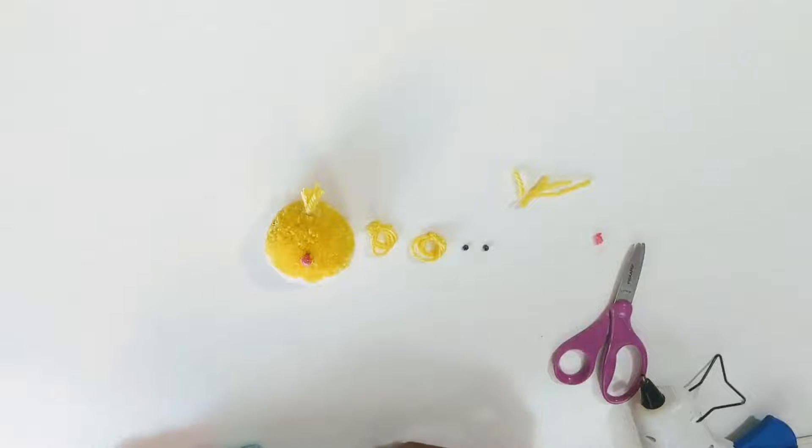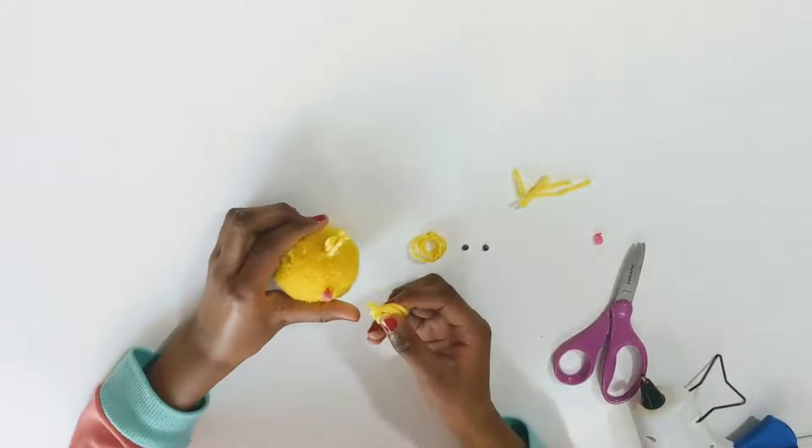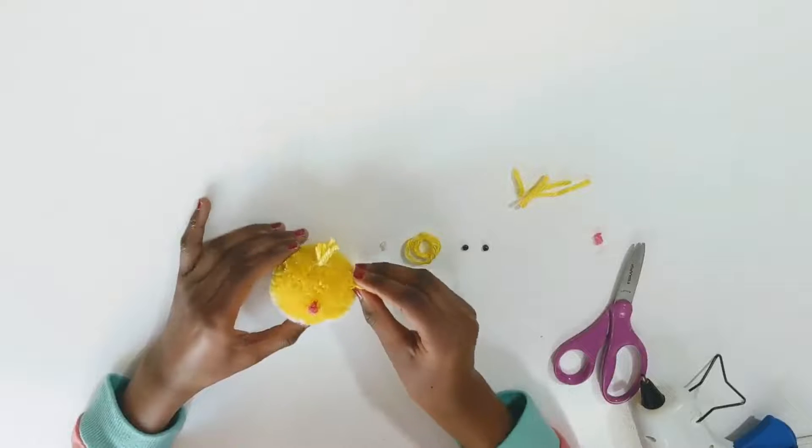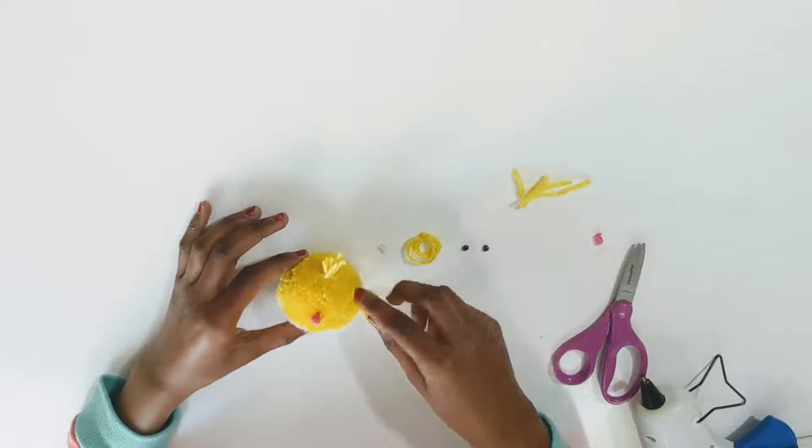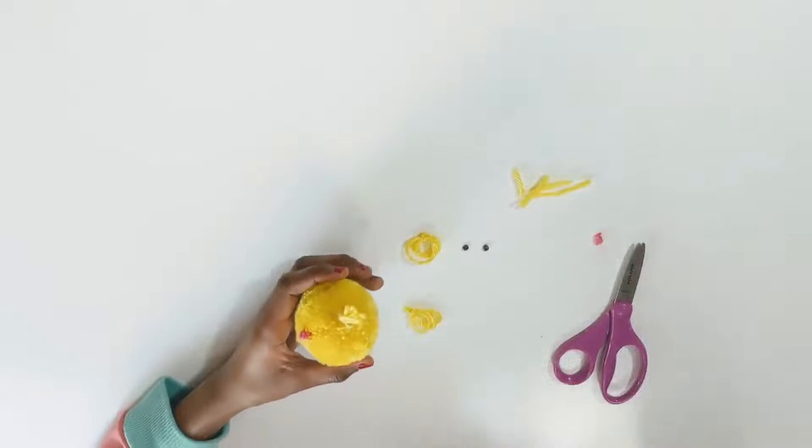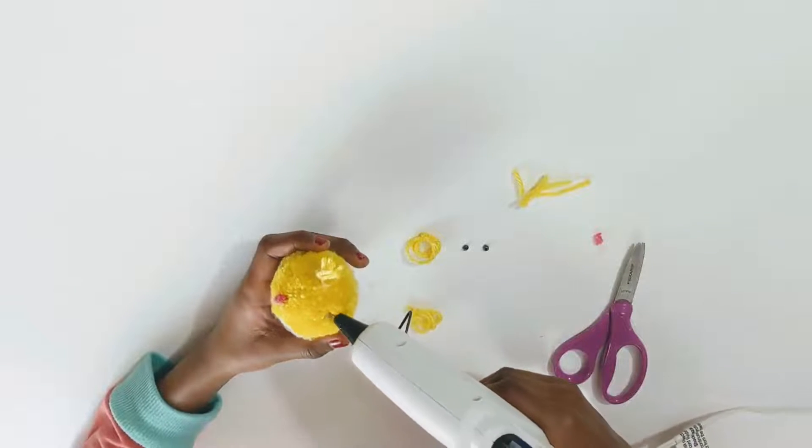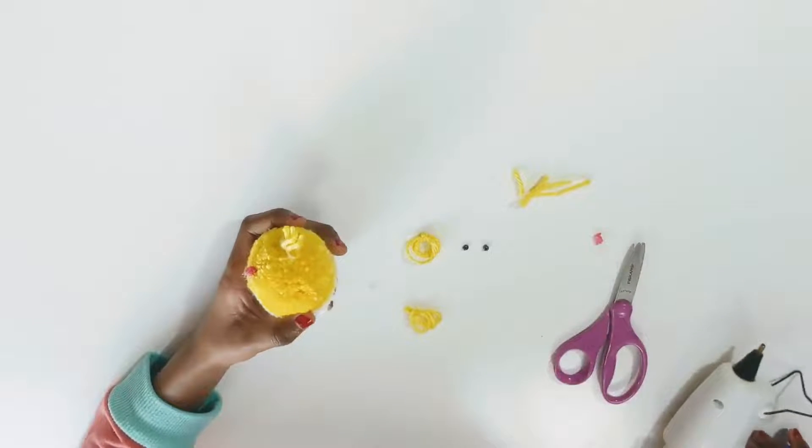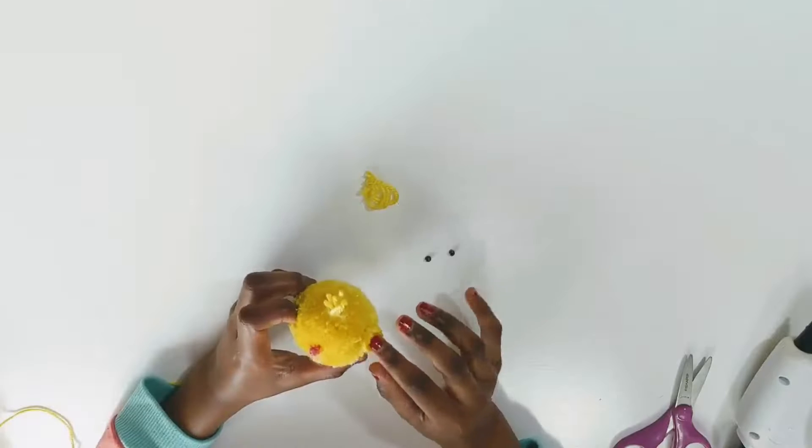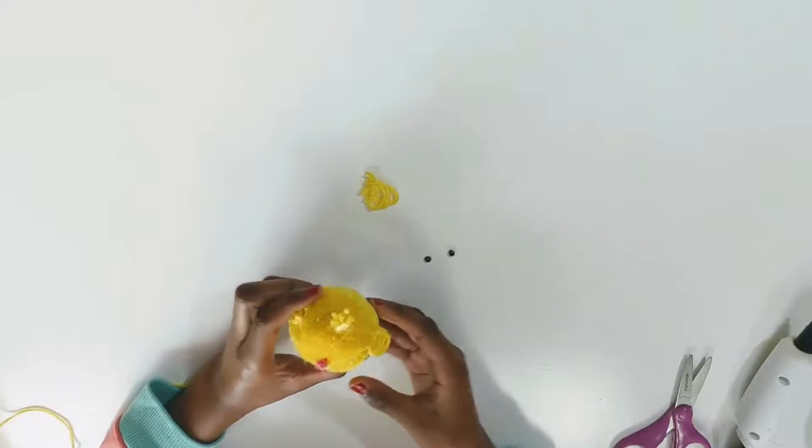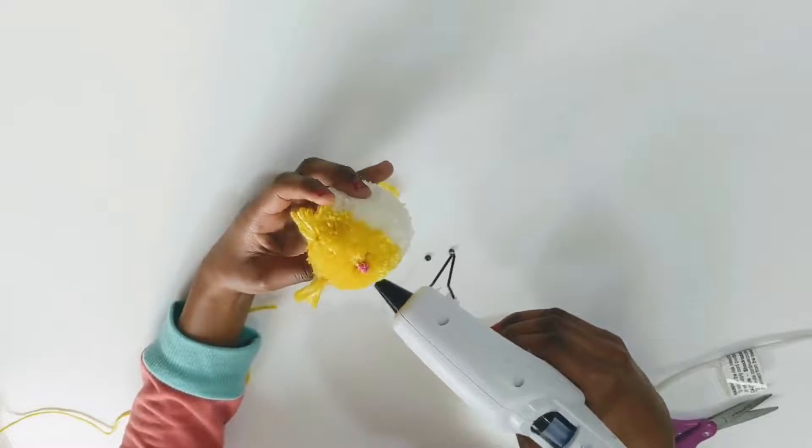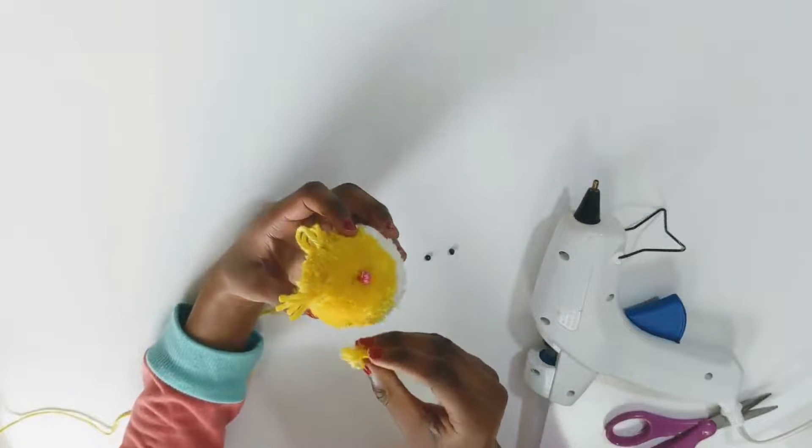It's time for the flaps. The flaps are going to go on either side, just like this. First, we're going to dig a little hole again. Insert some glue and do the same thing. Now we'll do the same on the other side. Then we'll put some hot glue on the other side and attach the other flap.